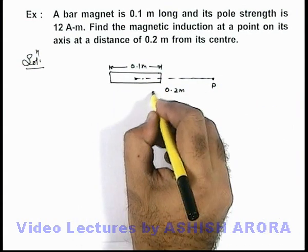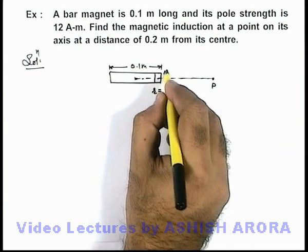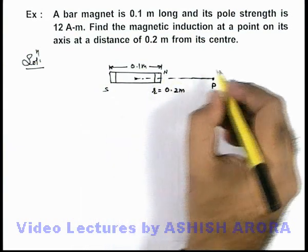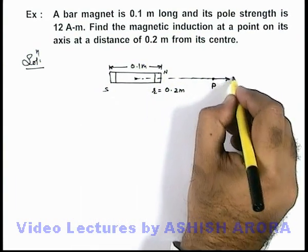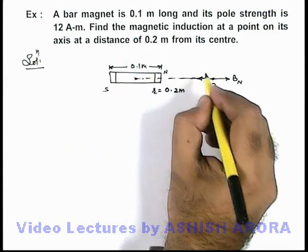If we consider this as r, this is the north pole of the magnet and this is the south pole. We know that due to north pole at point P the magnetic induction will exist away from it and due to south pole it will exist toward it.